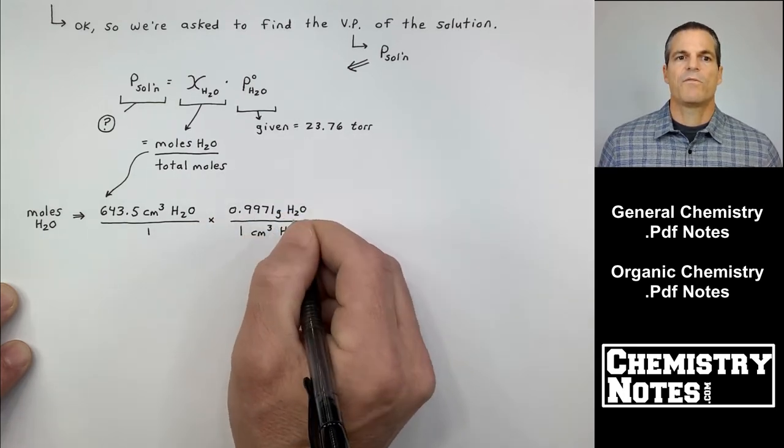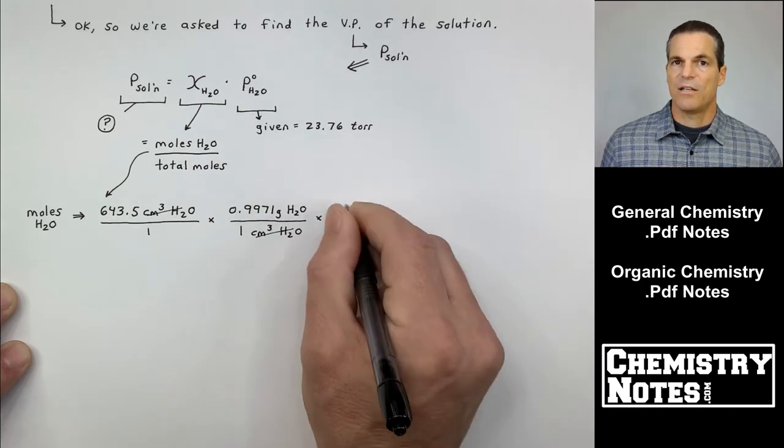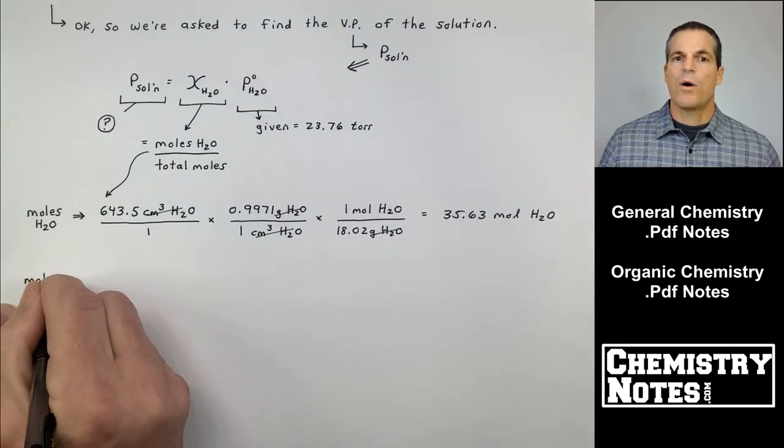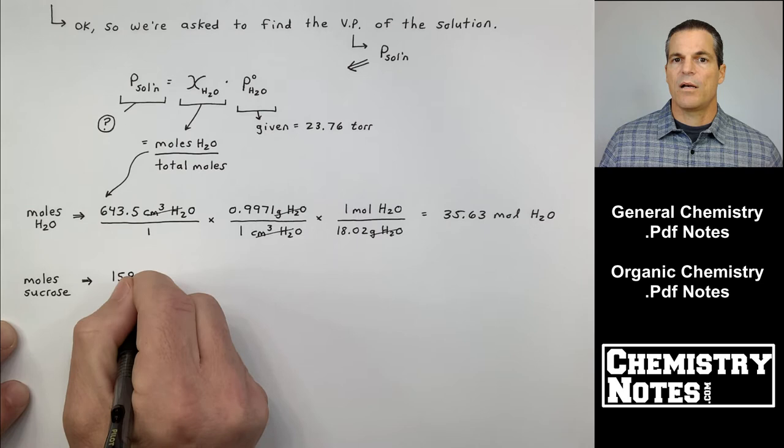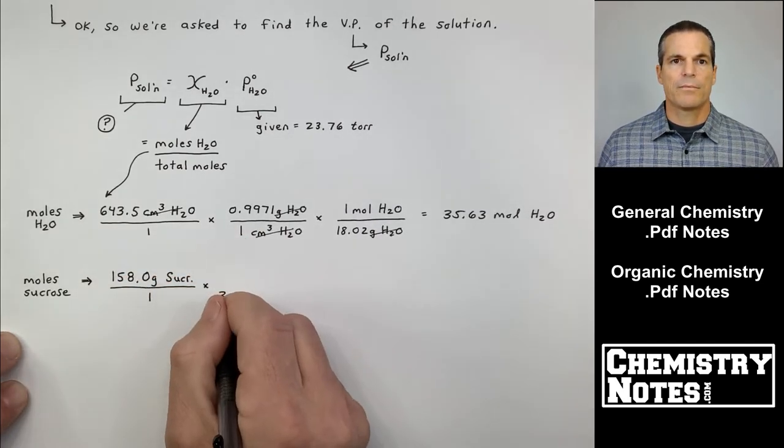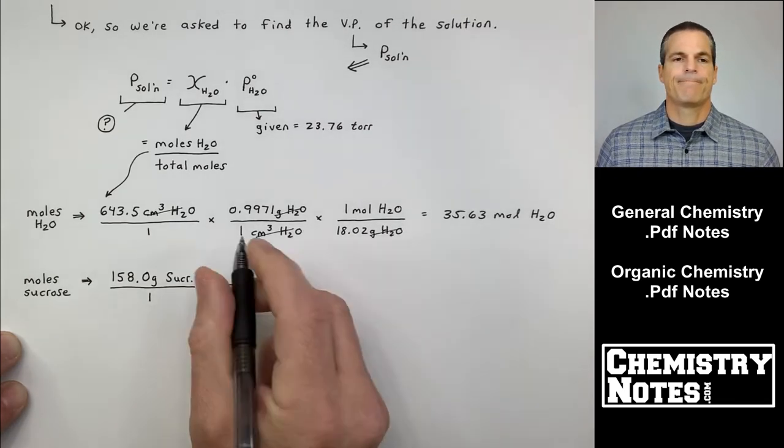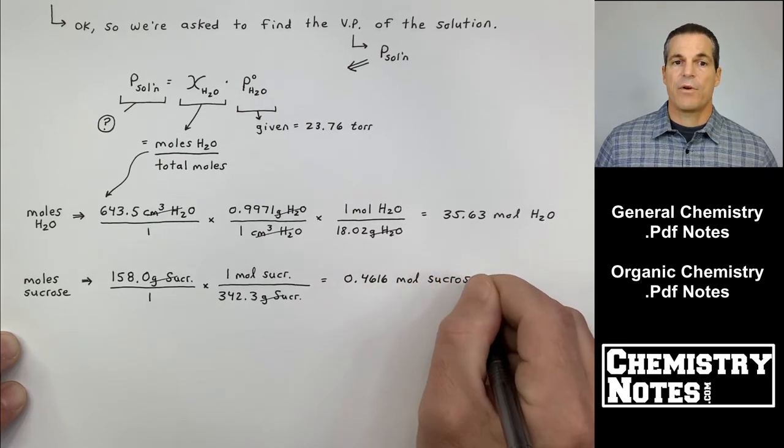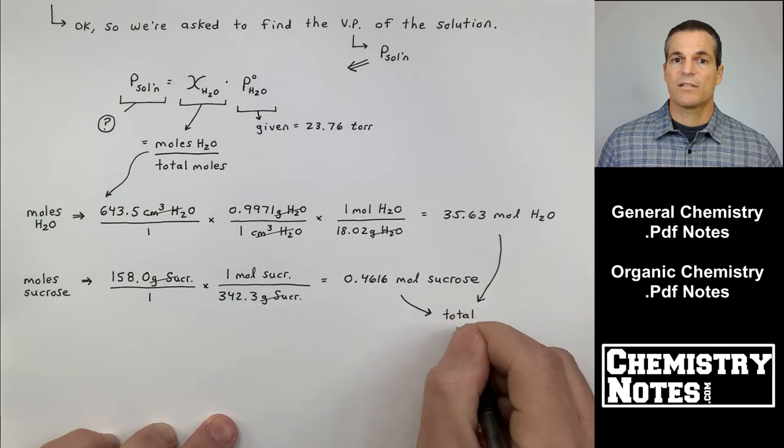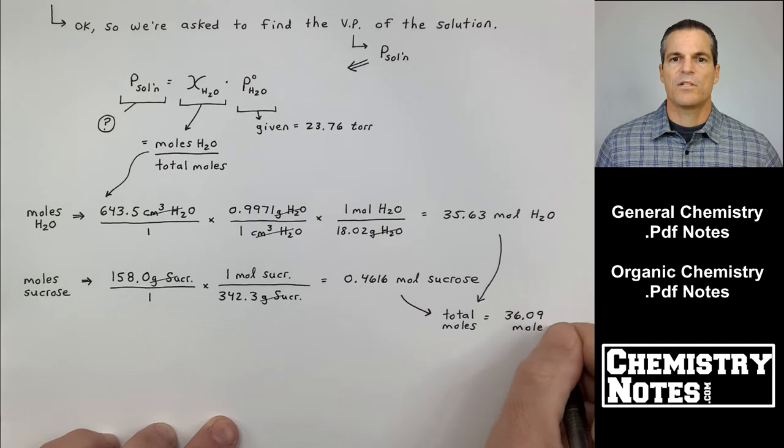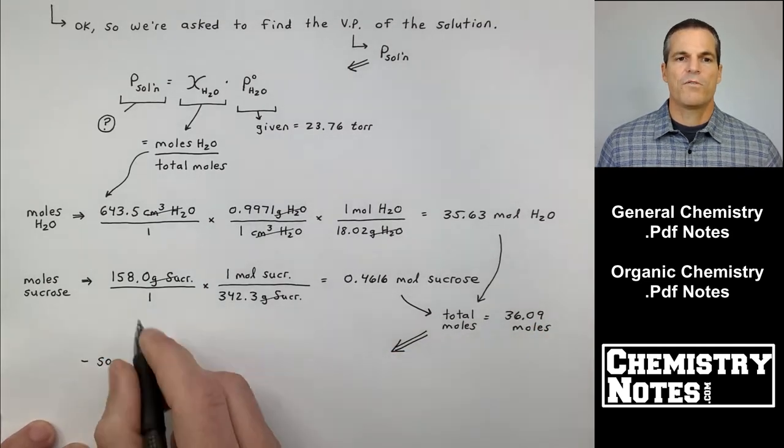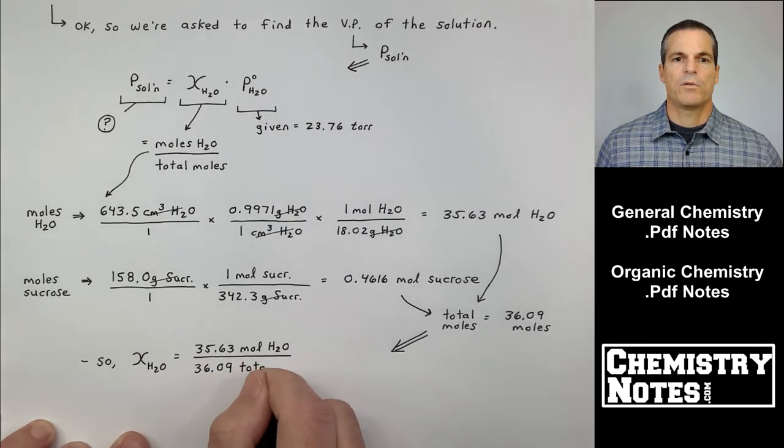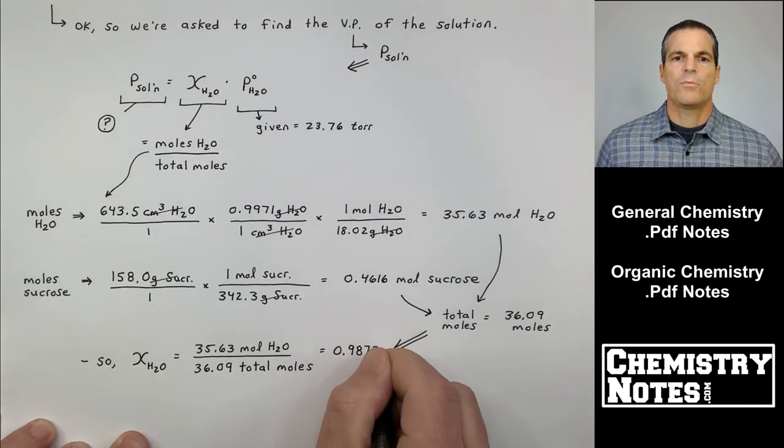Well, moles of H2O is 643.5 centimeters cubed of water times the density of water, 0.9971 grams per centimeters cubed. That gets me out of centimeters cubed into grams H2O. I divide by the molar mass of 18.02. That gets me 35.63 moles of H2O. So now I have my numerator. Moles of sucrose. How do I find that? Well, the reason why I'm looking for moles of sucrose is because I'm going to add it to the moles of water to give me the total moles, to give me my denominator. 158 grams of sucrose divided by the molar mass gives me 0.4616 moles of sucrose. Total moles of everything in this solution is 36.09 moles. So the mole fraction of water is 35.63 moles of water all over the total moles, which we just found to be 36.09 total moles. Mole fraction is 0.9873.